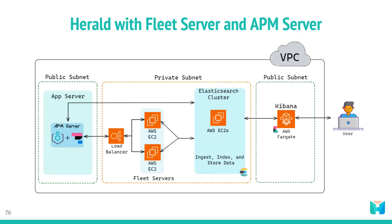Incorporating Fleet Server and APM Server into our architecture diagram, we can see the Fleet Servers toward the middle of the screen. They are used to manage the Elastic Agent installed on the app server to act as APM Server. The Elastic Agent then collects data from the APM agent and sends it to Elasticsearch.